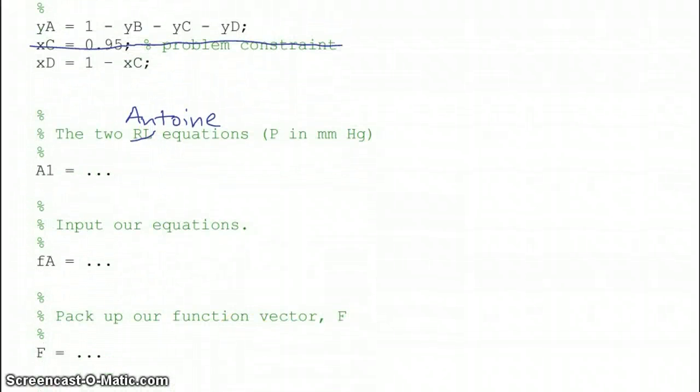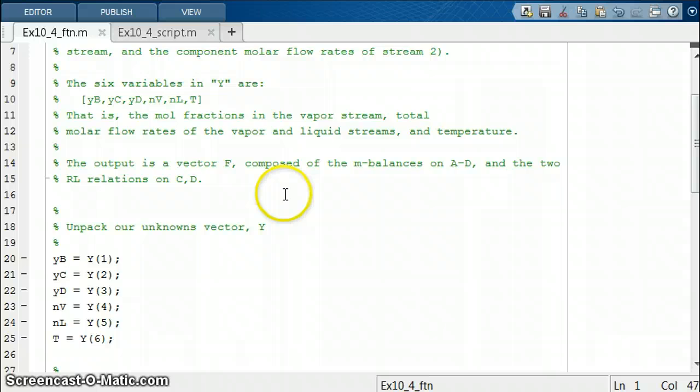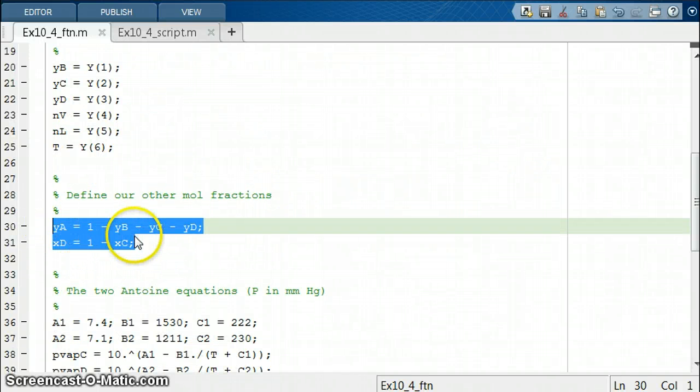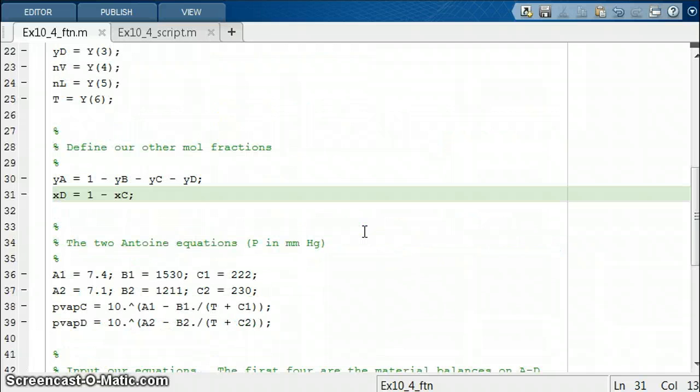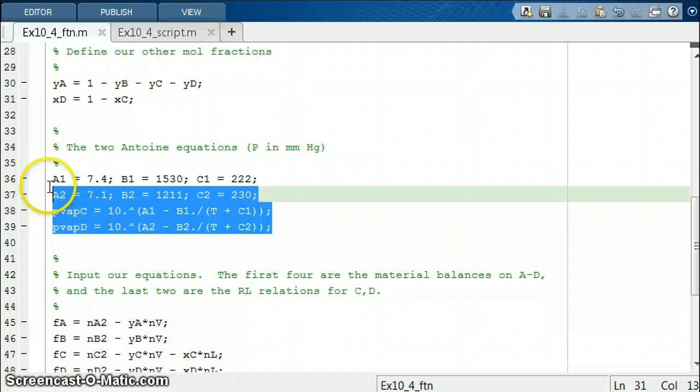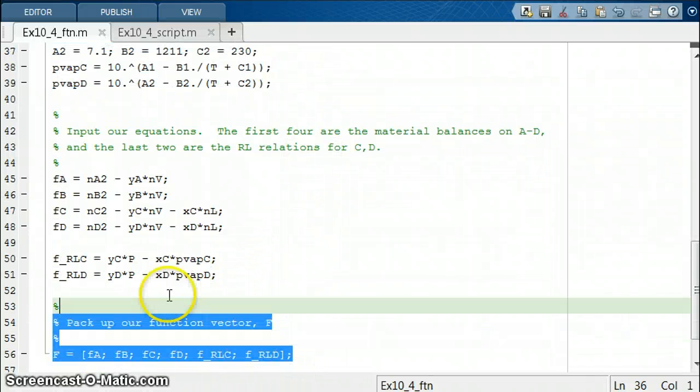To see what this actually looks like in MATLAB, let's switch over to MATLAB. Here is the function where the extra parameters are right here. These are the parameters that come after the first input, which is our unknown vector Y. We are defining our mole fractions there, and so we don't also have to define or give values for XC, for the system pressure, and for the inlet molar flow rates. We have, as before, our two Antoine equations which are given here. The rest of the function looks exactly the same as it did before.